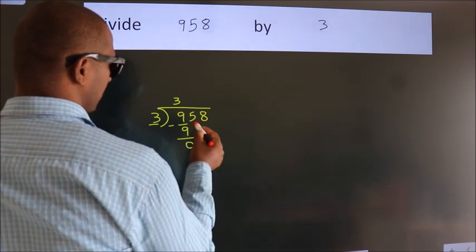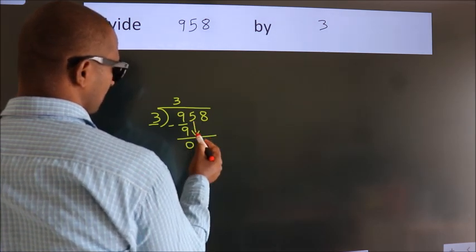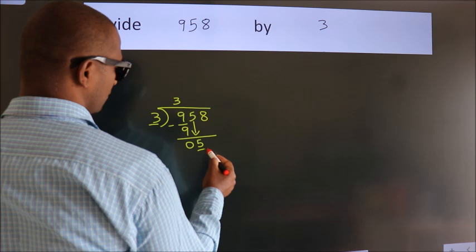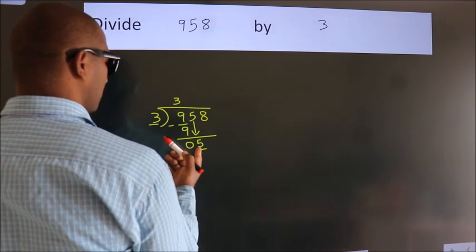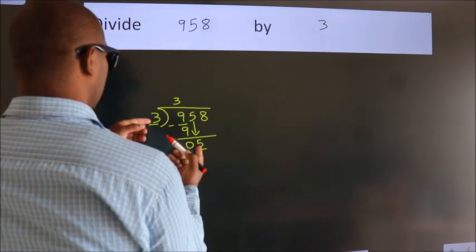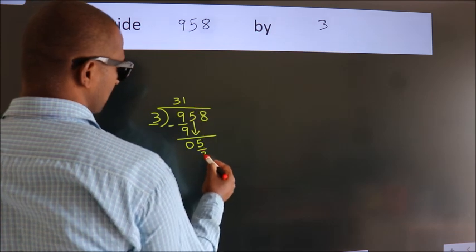After this, bring down the beside number, so 5 down. A number close to 5 in the 3 table is 3 ones, 3.